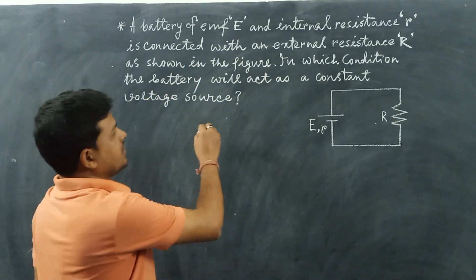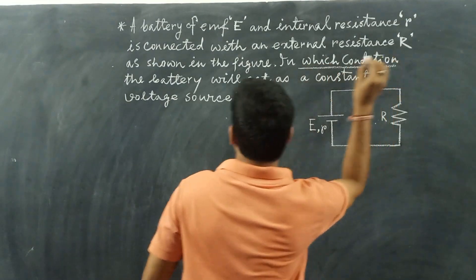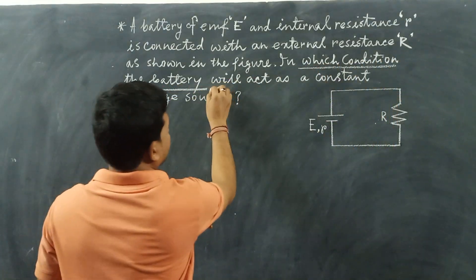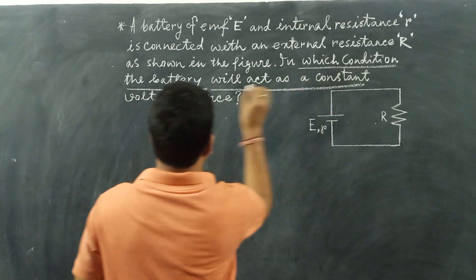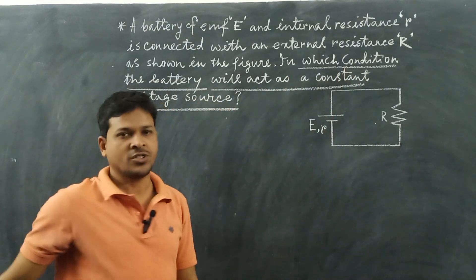Now, the question is: in which condition will the battery act as a constant voltage source?